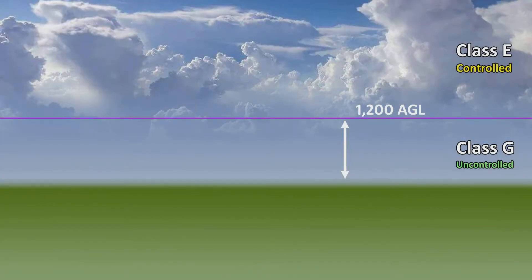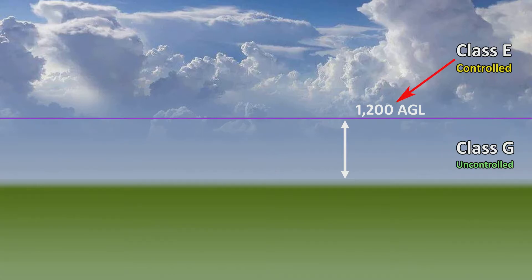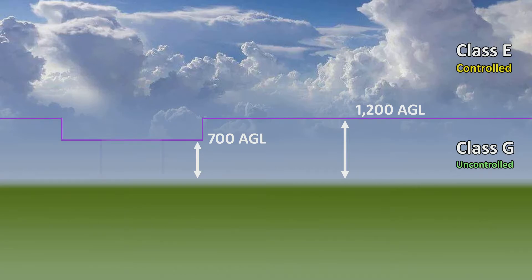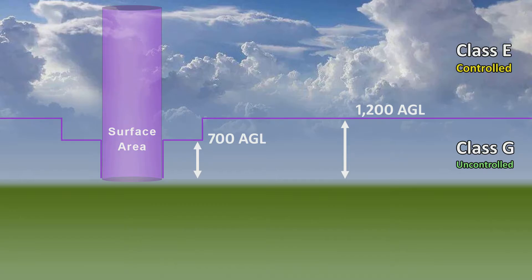Let's do a quick review of Class E airspace and the requirements for airspace authorizations. Class G airspace starts at the surface and extends upwards until it bumps against another airspace class — in this case, Class E starting at 1,200 feet AGL. Class G is uncontrolled airspace and Class E is controlled airspace. In some places, usually around airports, the Class E dips down and starts at 700 feet. These are called transition areas. The third type of Class E is called Class E surface area — this is where there is no Class G at all because the Class E actually starts at the surface.